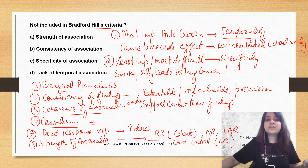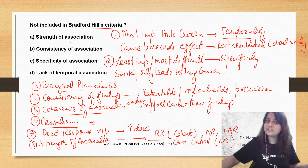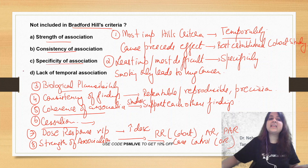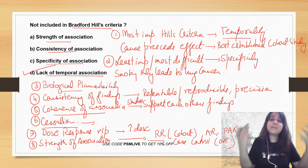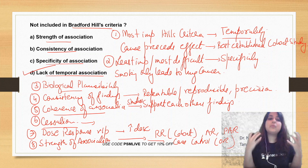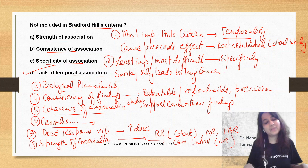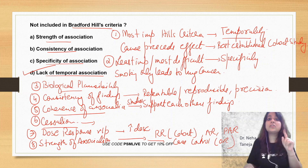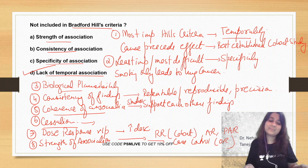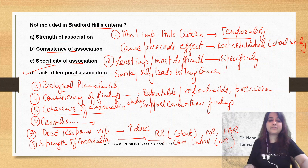Now look at the question: not included in Bradford's Hill — strength of association? Yes, it is included. Consistency? Yes. Specificity? Yes. Lack of temporal association? No — it is the presence of temporal association that is required, not the lack of it. So I hope I made Bradford's Hill's criteria easy for you. This is also known as Surgeon's Hill's criteria. Thank you so much for watching.